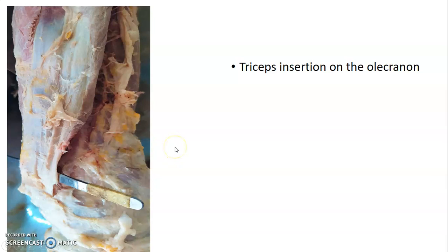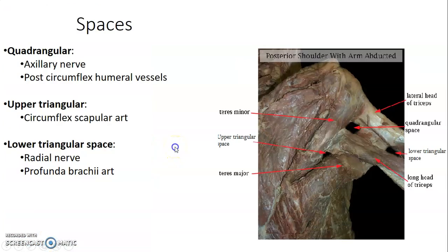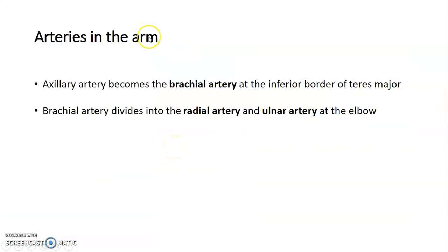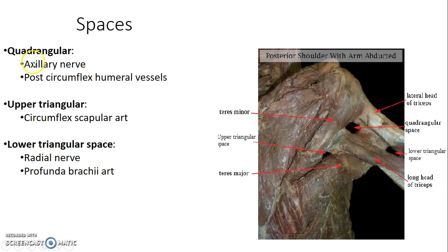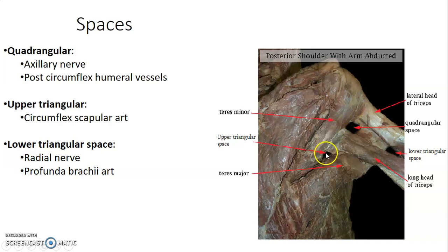Then we go to the spaces in the arm. So we have three spaces: the first is the quadrangular space, the second is the upper triangular space, and the third is the lower triangular space.